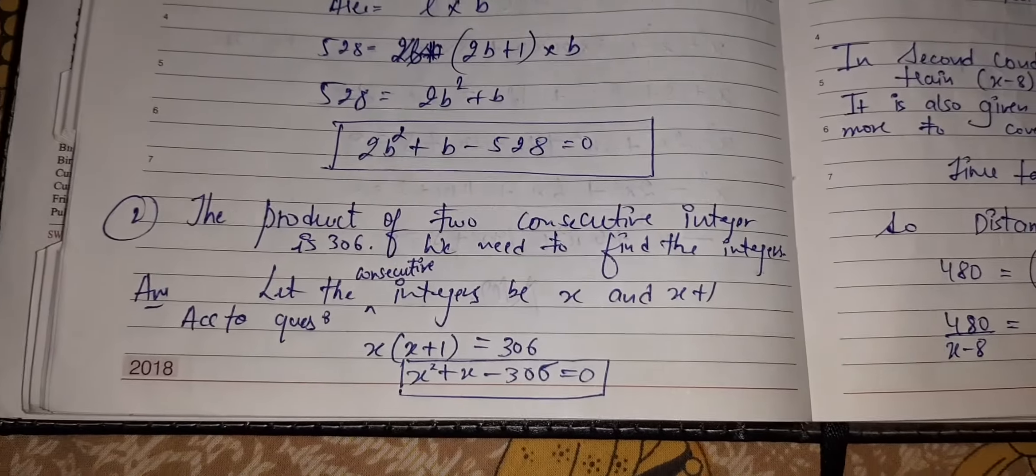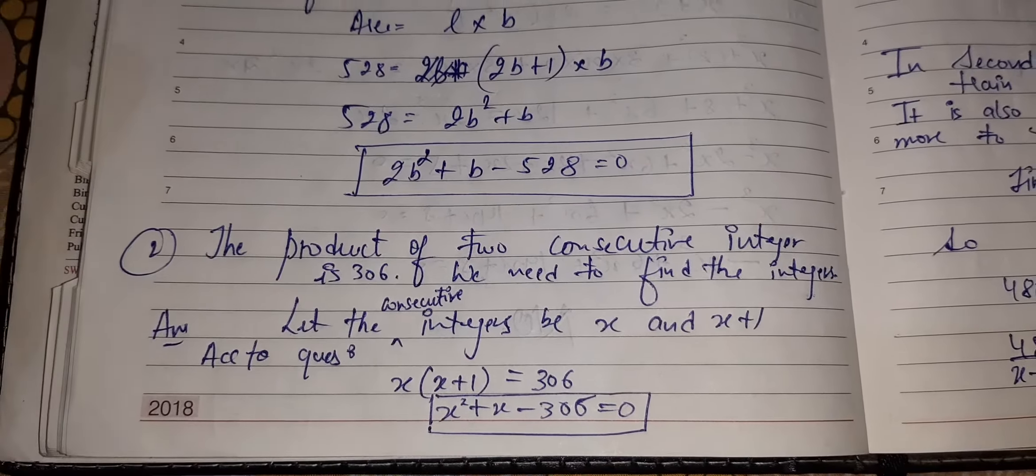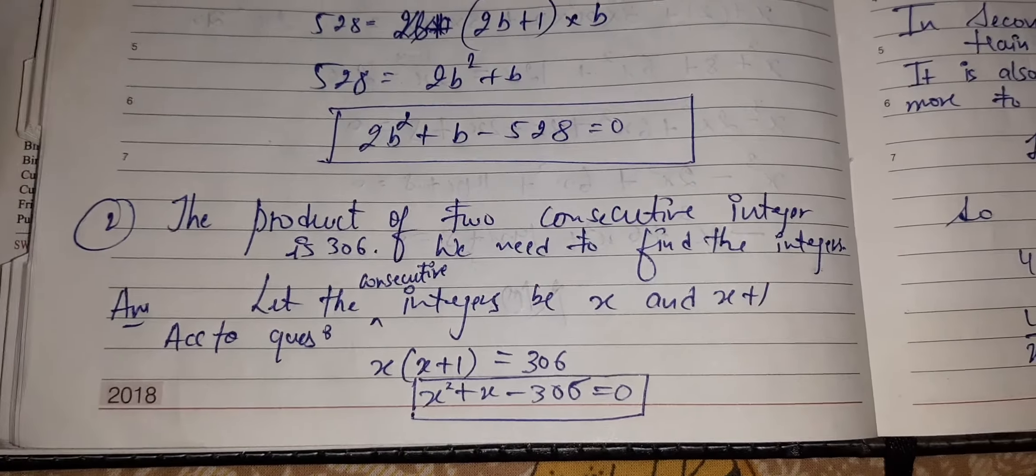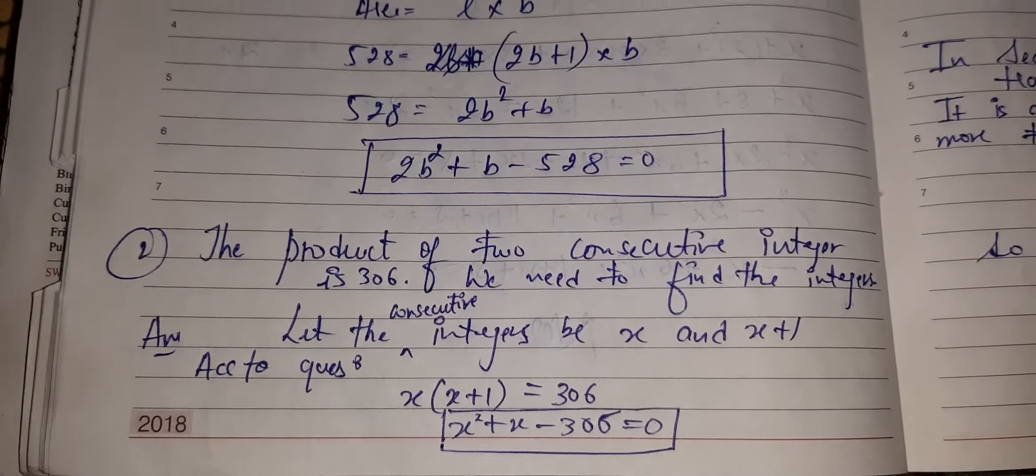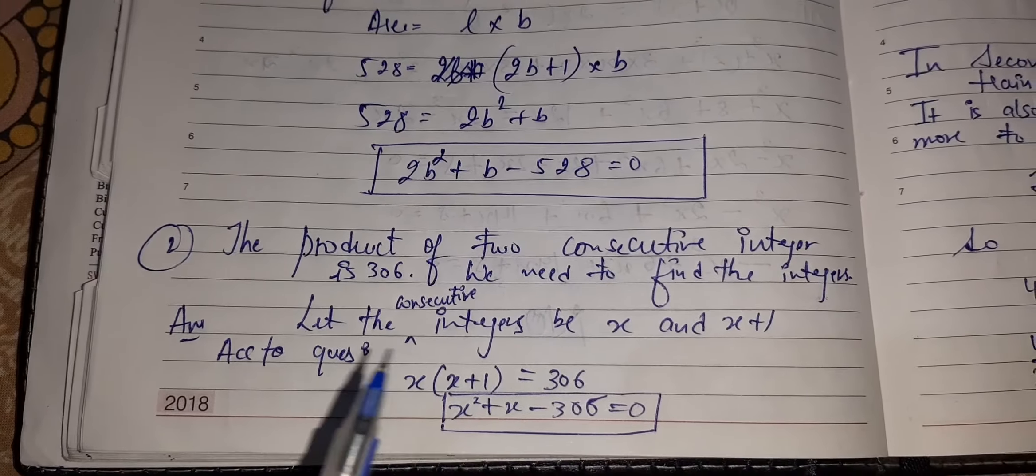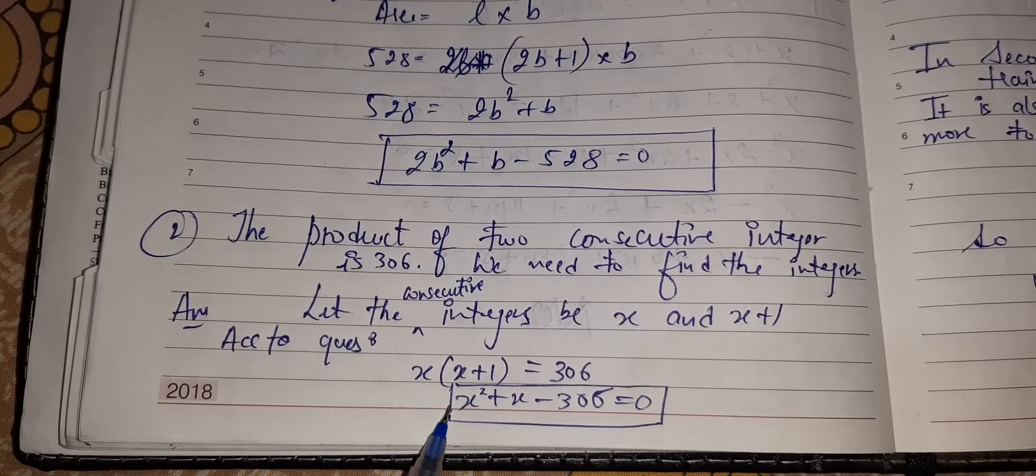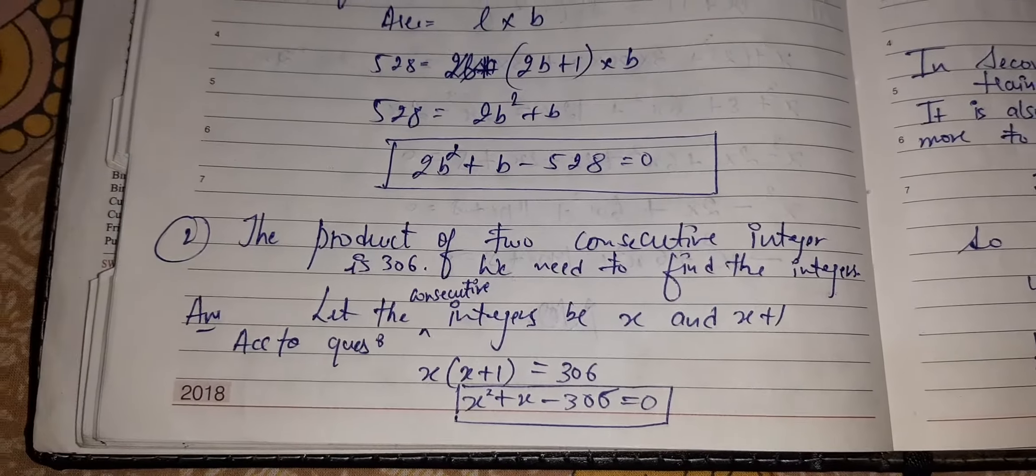Okay? The next question. The product of two consecutive integers is 306. We need to find the integers. Consecutive integers, I have told you, X, X plus 1. The two consecutive integers are X and X plus 1. According to question, X squared plus X minus 306. Very easy question.